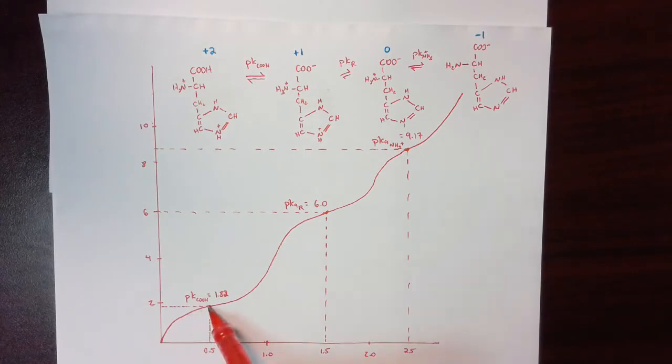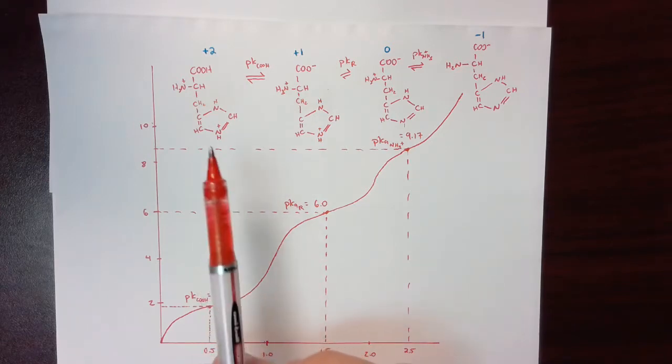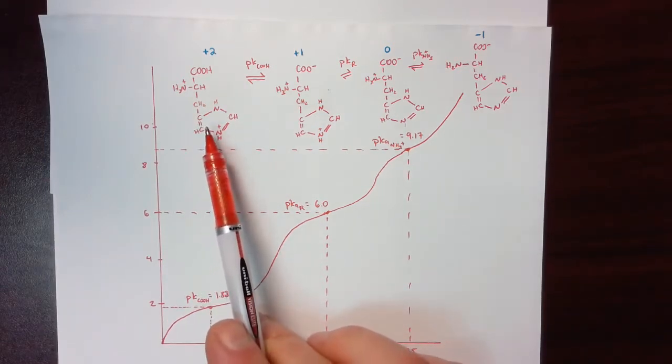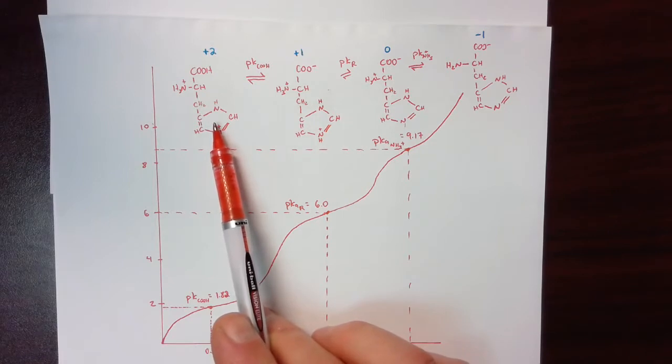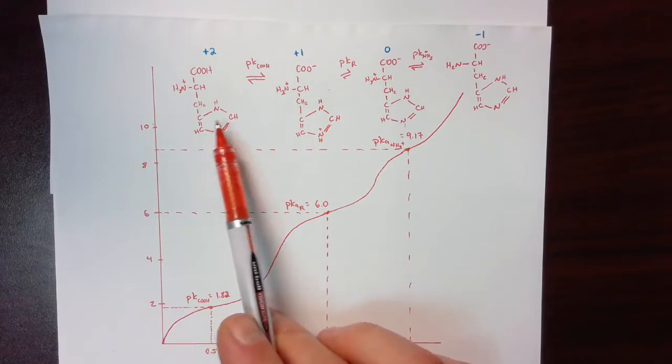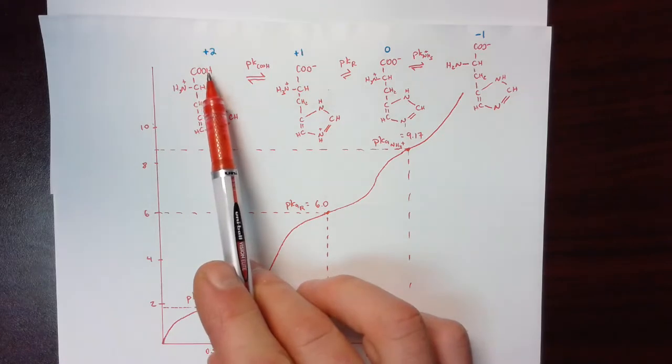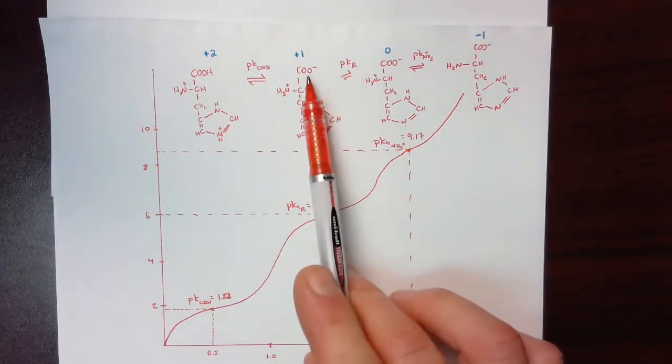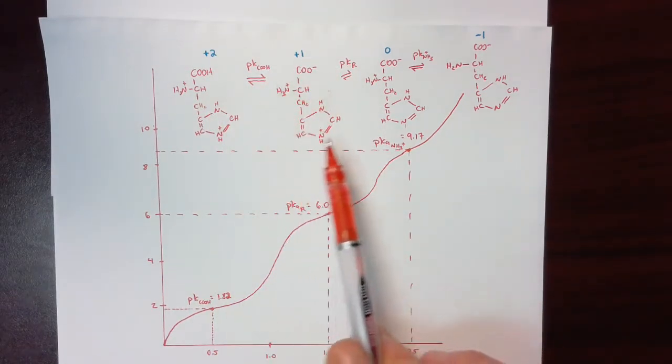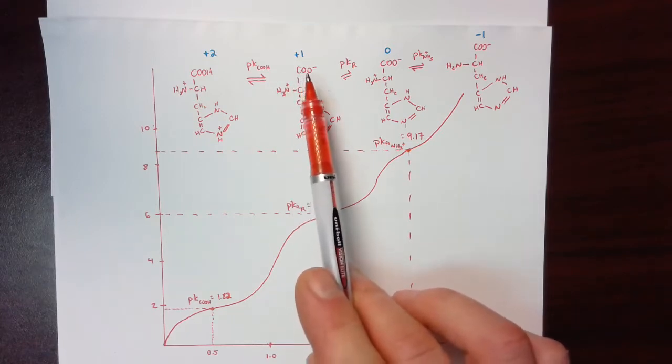And at the pKa at 1.82, 50 percent of the histidine molecules are in this form here where the carboxylic acid is protonated and 50 percent of them are in this form here where the carboxylic acid is deprotonated.